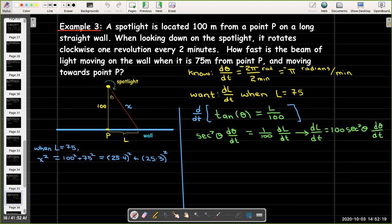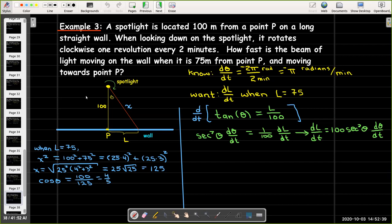So, if I call the length of the beam of light x, I can use the Pythagorean theorem when L equals 75. Do some simplification, and I'll find that x is 125, which means I can find cosine of theta being adjacent over hypotenuse. That simplifies to 4 over 5. And, I find cosine of theta because I know that secant of theta is the reciprocal, 5 over 4.